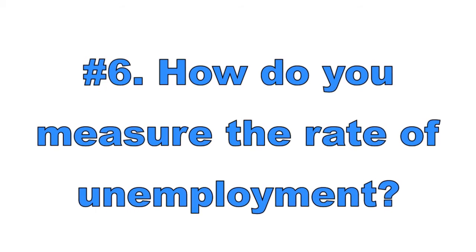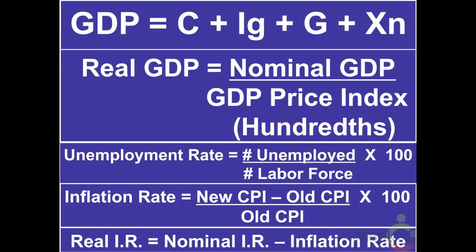Number 6: How do you measure the rate of unemployment? The unemployment rate measures the percentage of people in the labor force that are presently unemployed and actively looking for employment. To calculate it, take the number of people unemployed and looking for work and divide by the number of people working plus the number of people looking for work. The unemployment rate is equal to quantity unemployed divided by the quantity in the labor force, times 100. Note that the unemployment rate does not count discouraged workers — people who have given up their job hunt — so the unemployment rate is often understated.